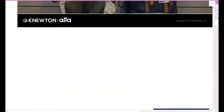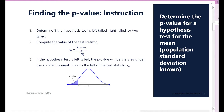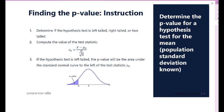How do we find a p-value? First, you determine whether the hypothesis test is a left-tail, right-tail, or two-tail test — that comes from H_a, the alternative hypothesis. After that, we calculate the test statistic, which is a z-score: X-bar minus mu-null, divided by the standard deviation divided by the square root of n.